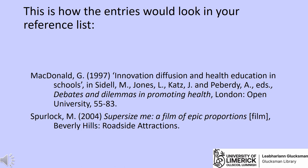Here we see how our in-text citations would appear in a reference list. I have already stated that a reference list appears on a separate page at the end of your document, and it is an alphabetical list of all the sources that you refer to in your paper. If I take Spurlock, for example, the reference list follows the following sequence.